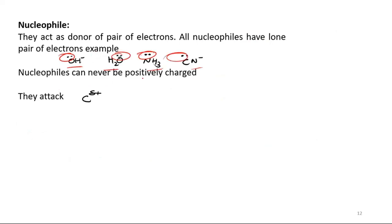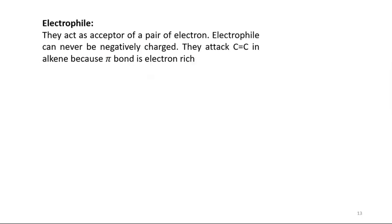Nucleophiles can never be positively charged — they attack carbon delta-positive. Electrophiles act as acceptors of a pair of electrons and can never be negatively charged. They attack the double bond carbon in alkenes because the pi bond is electron rich.